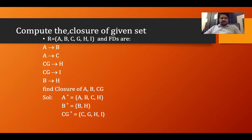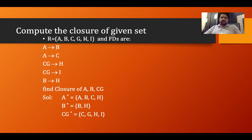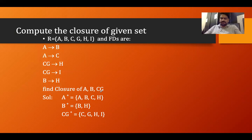The problem says: compute the closure of the given set. We have relation R with attributes {A, B, C, G, H, I}. This relation is like a table with six columns. The functional dependencies are given, and the question is to find the closure of A, B, and CG.